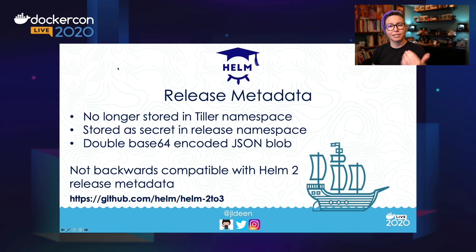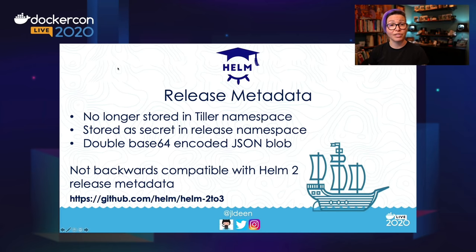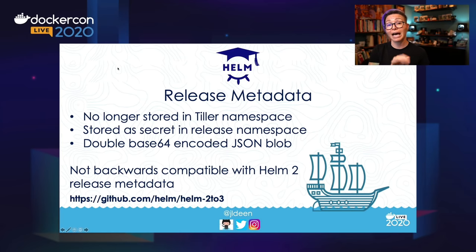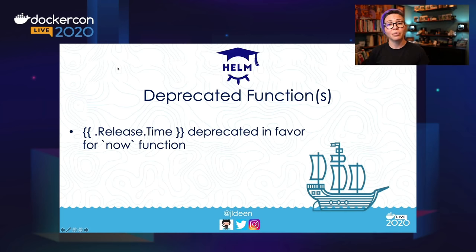The release metadata is now stored in whatever namespace you deploy it to, and the metadata object itself is also different. It was previously stored as a config map; now it is stored as a secret in whichever namespace the release is. It's double base64 encoded, which means you can decode it if you want — just do base64 decode. As a result, it is not backwards compatible. Helm 3 releases are not backwards compatible with Helm 2 release metadata. You can go from Helm 2 over to 3 using a plugin. One more thing: `release.time` has now been deprecated in favor of the `now` function, which gives you greater control over date and time format.